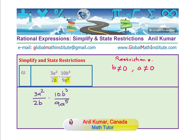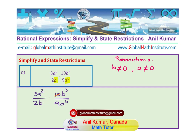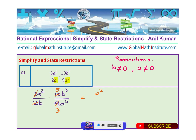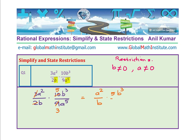Now let us look at how to simplify. Take care of the numbers first: 10 can be divided by 2 giving 5, and 9 can be divided by 3 giving 3. So we simplify the numbers and write a squared over b times 5b cubed over 3a to the power of 5. For the variables: b to the 1 and b cubed gives b squared; a squared and a to the 5 gives a cubed (5 minus 2 is 3). So we get 5 over 3, b squared over a cubed.